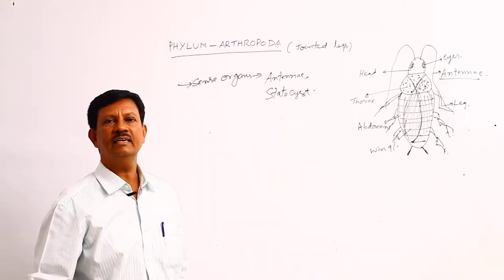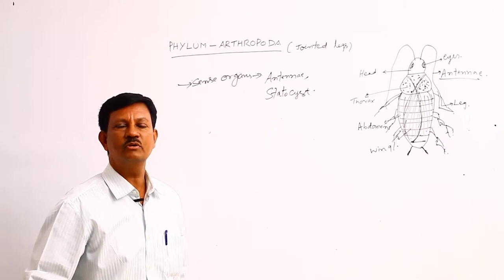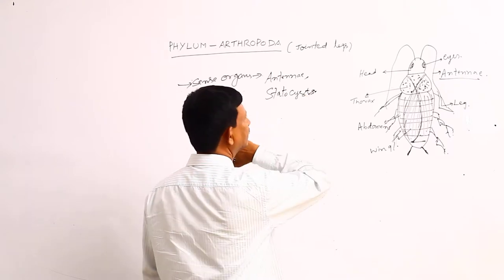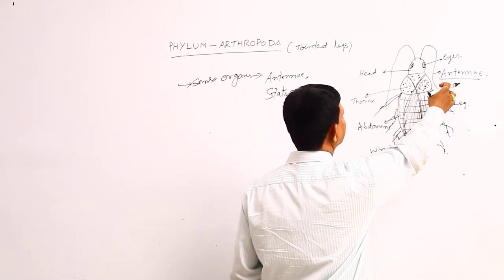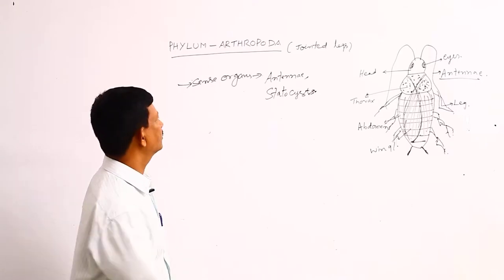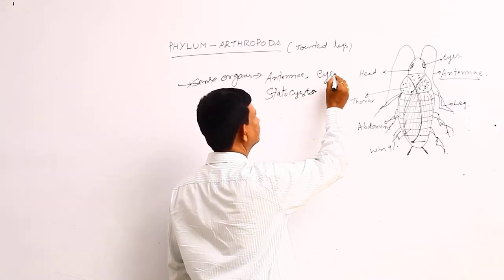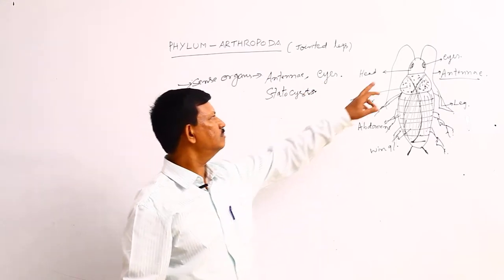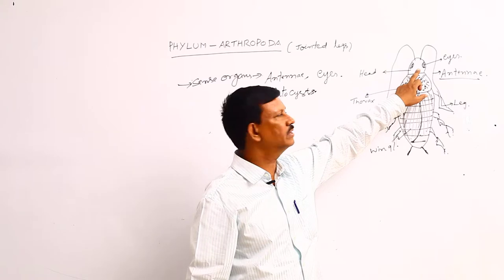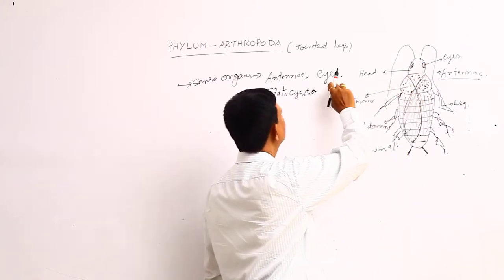The statocyst acts as an equilibrium organ for the body, also known as a balancing organ. In some animals statocysts are present, in some animals antennae, maxillae, etc. are present, and eyes are also present. In some animals simple eyes are present, in some animals compound eyes are present. For example, in the cockroach, compound eyes are present.